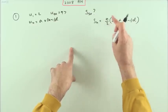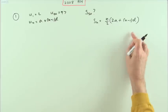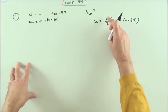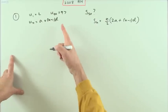That's why I have 2a plus n minus 1d - it's actually just the average of the first and the last, and then n times the average.